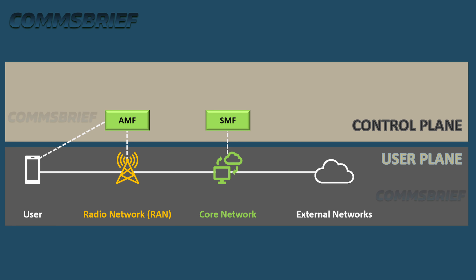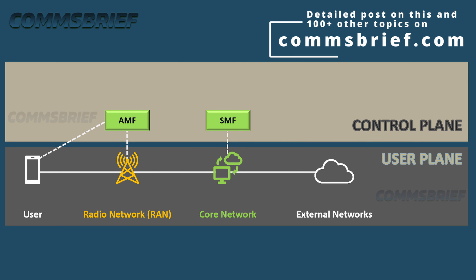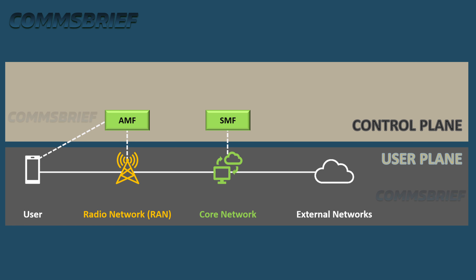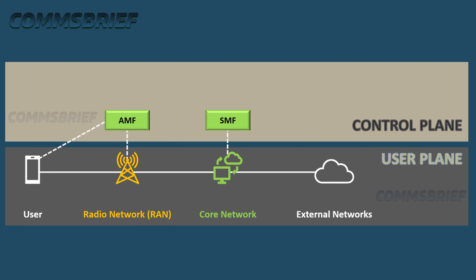Before diving into the difference between standalone and non-standalone 5G networks, let's understand the concept of user and control planes in mobile communications. The user plane carries user data — for example, the content of a YouTube video you may be watching. The control plane carries control functions such as signaling traffic. Standalone 5G (5G SA) uses a 5G radio network (NG-RAN, Next Generation Radio Access Network) and a 5G core network (5G CN). Both the user plane and control plane are provided by the 5G network.